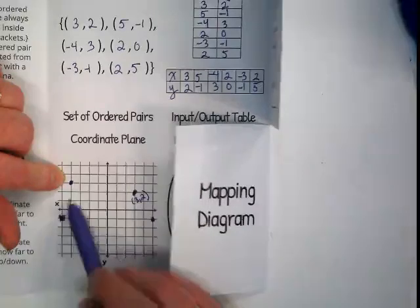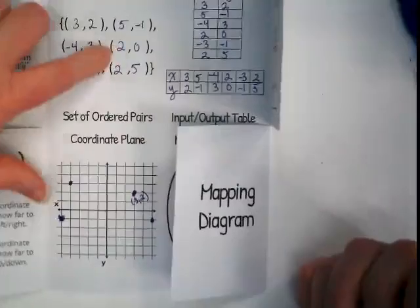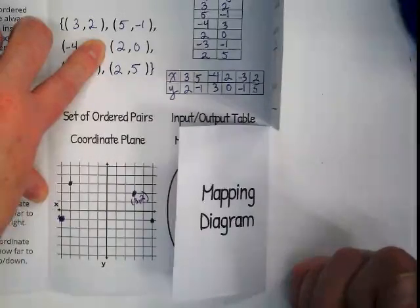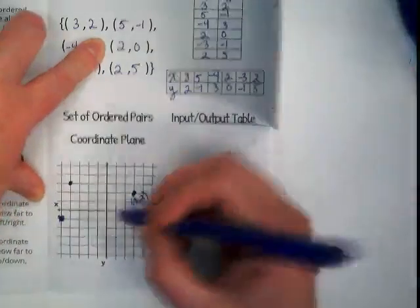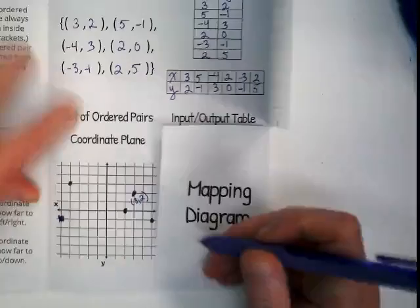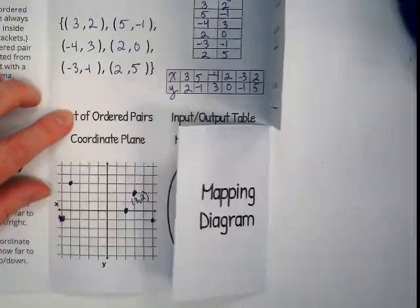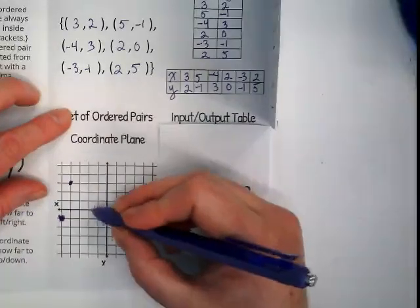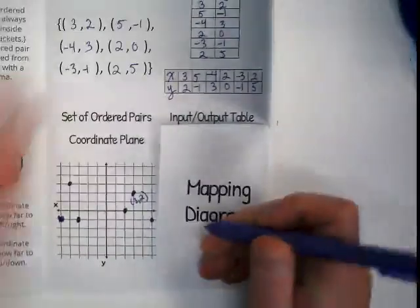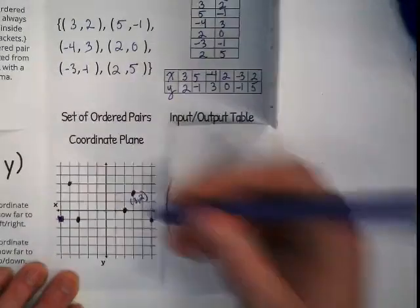Negative four. Positive three. Where is my two zero going to end up on the X or Y axis? It's going to end up on the X. We're going to go to the right two, and it doesn't go up at all. Negative three, negative one. And finally, two, comma, five.